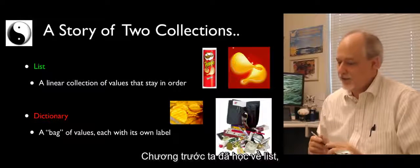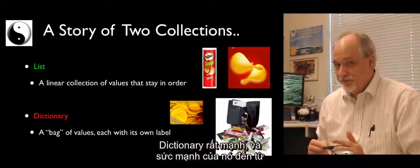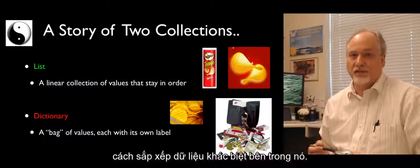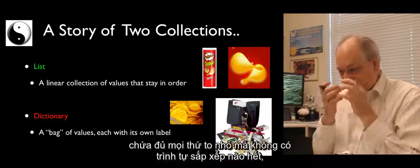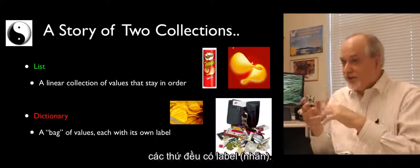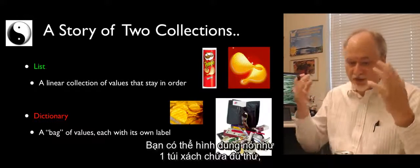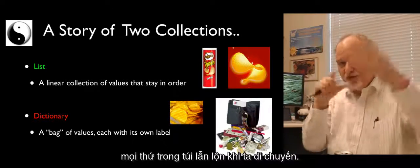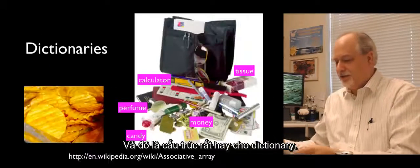We talked about lists in the last lecture. This lecture we're talking about dictionaries. Dictionaries are very powerful, and their power comes from a different way of organizing internally. It's a bag of values — just stuffed in, not in any order. Things have labels. You can think of it like a purse with just things in it. It's not stacked; stuff moves around as you go. That's a very good model for dictionaries.